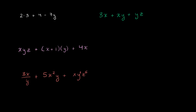What I want to do in this video is think about how expressions are formed and the words we use to describe the different parts of an expression. The reason why this is useful is when you hear other people refer to some expression and say, 'I don't agree with the second term,' or 'the third term has four factors,' or 'why is the coefficient on that term six?' — you'll know what they're talking about, and you can communicate in the same way. So let's think about what those words actually mean.